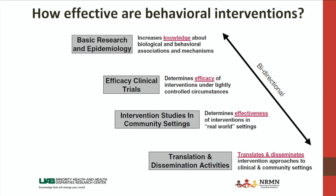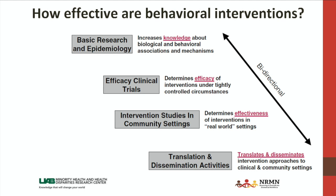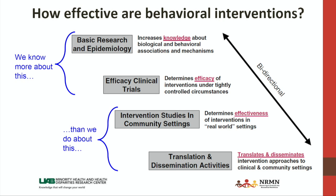Moving down the chain, there are effectiveness studies — taking what works under best-case conditions and testing whether we can get those same effects in more real-world environments, with real-world populations, resources, and settings. Finally, there's translational and dissemination research — how can we scale these programs up on a more population level to reach communities and organizations? The basic and epidemiological research and the efficacy trials have had a lot of work done. We don't know as much about the last two parts of the chain, and there's a lot of work that still needs to be done in effectiveness and particularly in dissemination and implementation.